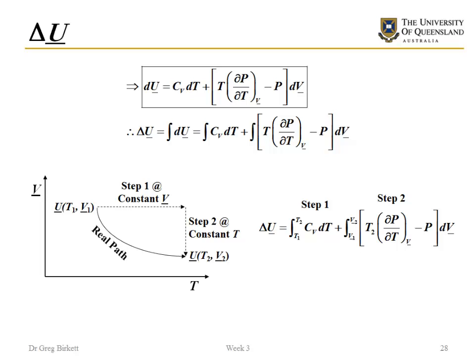In the previous video we looked at how we derived an equation for the change in internal energy using an equation of state. We've got for our change in U our heat capacity C_v times dT and then this term over here which is made up of pressure and partial differentials of the pressure. So we can use an equation of state in here.